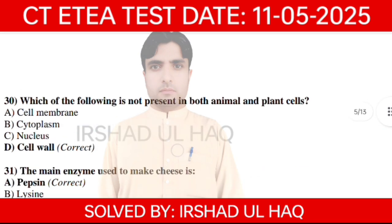Question 30. Which of the following is not present in both animal and plant cells? Option number D: Cell wall.